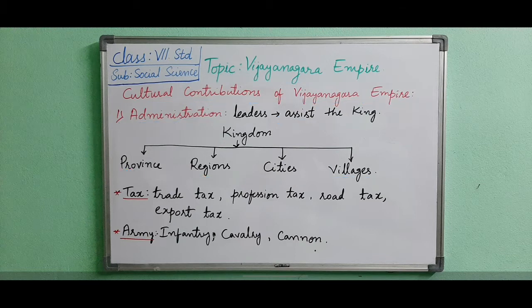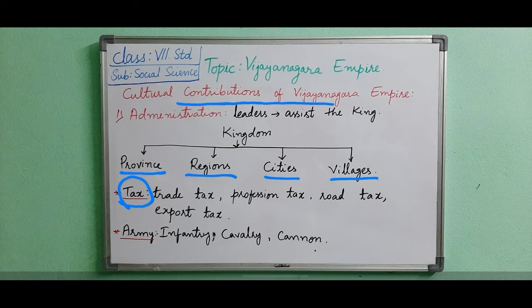Regional officers dispensed justice in the provinces. The major sources of income were trade tax, profession tax, road tax, export tax, and tribute in cash. During the period of Vijayanagara, their army consisted of infantry, cavalry, elephant, and cannon divisions.